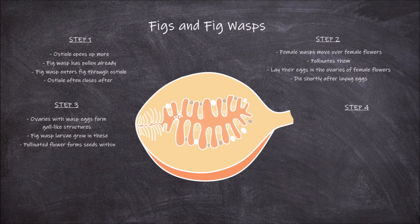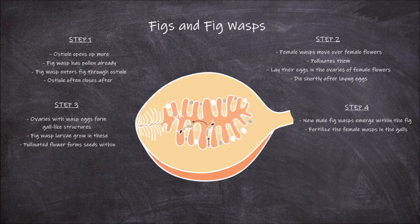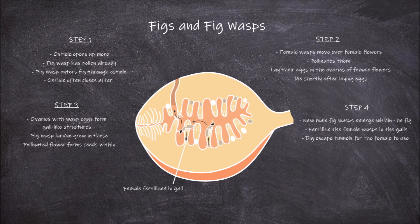The fourth step involves new male fig wasps emerging from the fig. The male wasp moves around to fertilise the female wasps while they are still in the galls. Once they mate with the females, they dig escape tunnels for the females to use to escape the fig fruit. They then die.